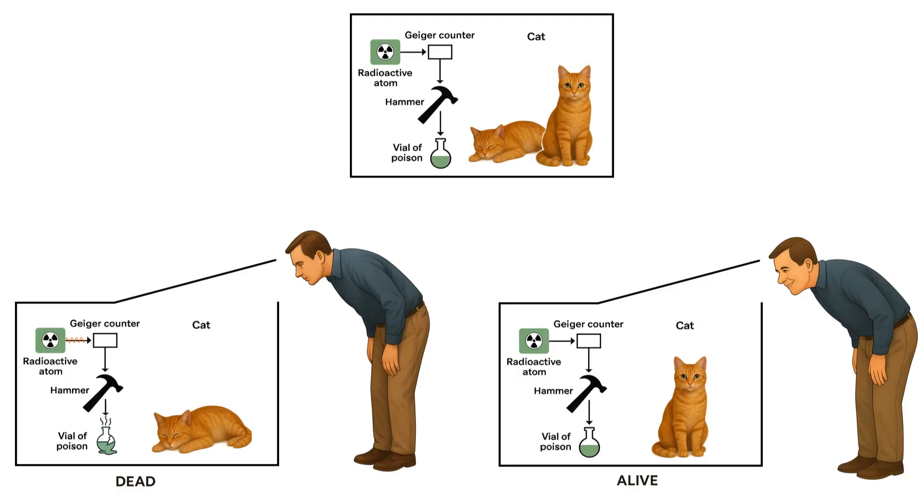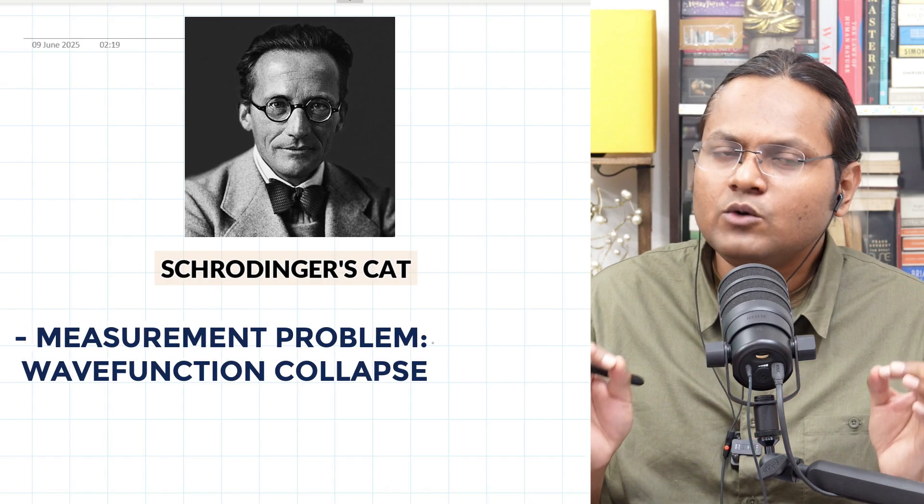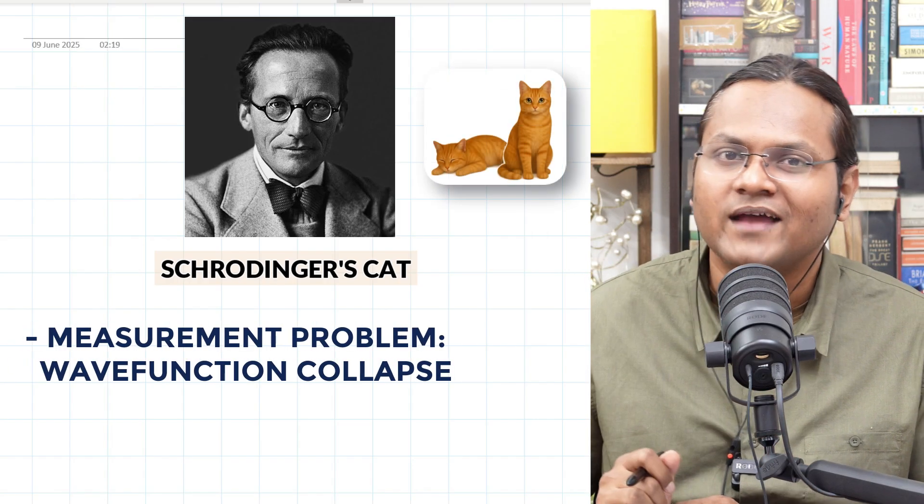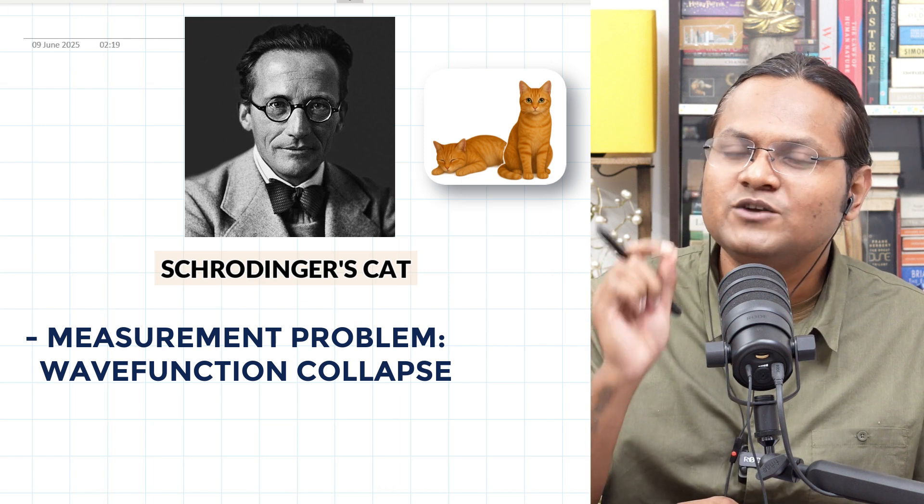Same goes for momentum. Same goes for energy. A particle exists in multiple energy levels of an atom before an observation is made. But the moment a measurement is actually made by an external observer or a measuring device, the particle's wave function collapses into something definite. This is known as the wave function collapse. And according to this, before anyone opens the chamber, the cat is in a state of being both alive and dead at the same time.